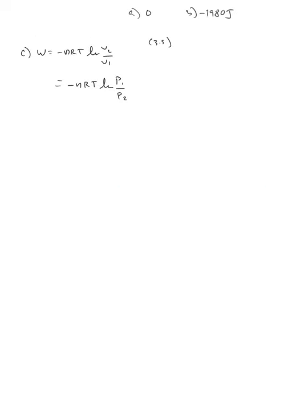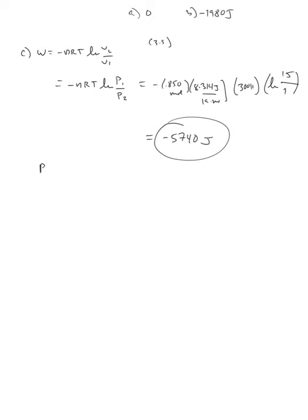For doing the reversible case, I'm using the equations based on 3.5, and I could just plug in some of the data that I already used. Here I'm going to use 8.314 so I can go straight to joules, and I have natural log of 15 over 1. The units will cancel. If I do that, I get quite a bit more energy out of my system by doing it reversibly.